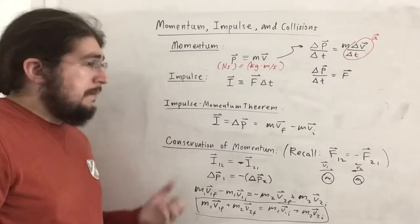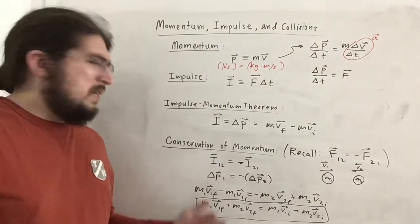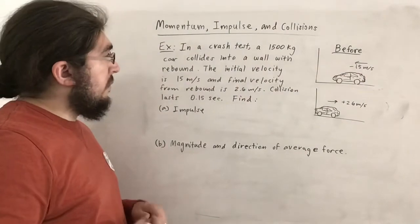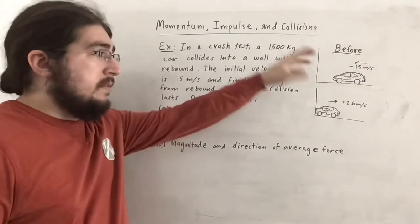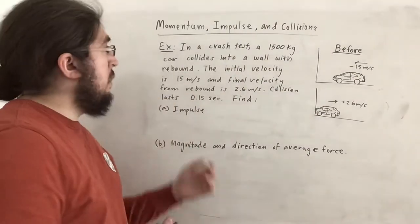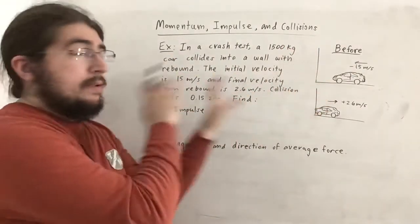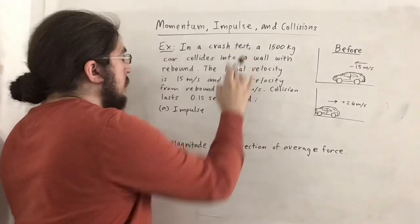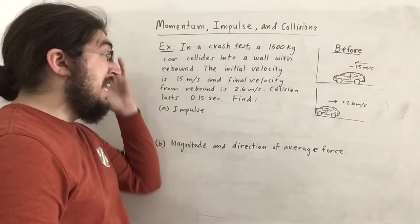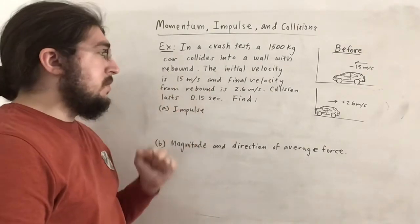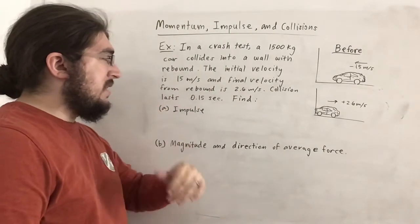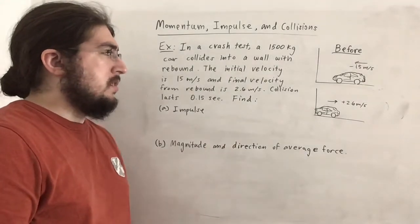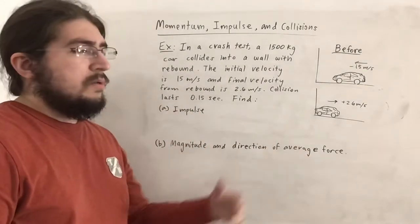Now we can move on to examples, and then we'll see a new idea in collisions, which is a modification of this formula. For this example, we have a car crash test. In a crash test, a 1,500 kg car collides into a wall with rebound. The initial velocity is 15 m/s and the final rebound velocity is 2.6 m/s. The collision lasts 0.15 seconds. We want to find (A) impulse and (B) magnitude and direction of the average force.